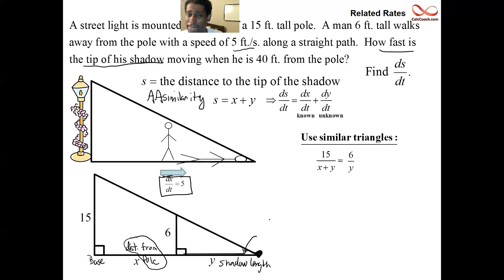Cross-multiply. And we'll get that 15Y is 6X plus 6Y. And our job is to somehow relate these to each other. Let's solve for Y. We'll put the X on the other side, have 9Y is equal to 6X, and then we divide by the 9, and we'll have that Y is equal to 2/3 of X. They're related to each other. Y isn't its own variable. Y directly depends on X. Whatever X is, I get 2/3 of it, and that's how long the shadow is. Hopefully it makes sense in the context of the problem.